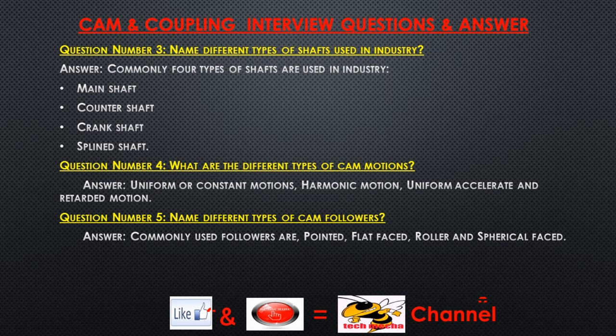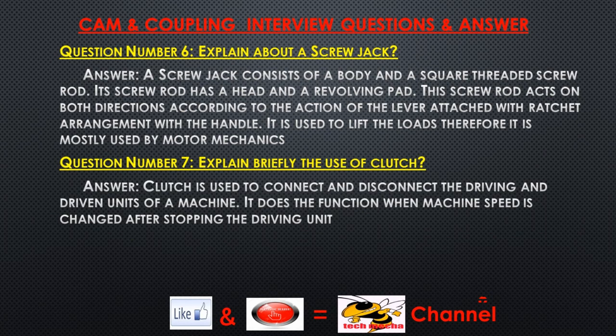Question number five: Name different types of cam followers. Answer: Commonly used followers are pointed, flat-faced, roller, and spherical-faced. Question number six: Explain about a screw jack. Answer: A screw jack consists of a body and a square threaded screw rod. Its screw rod has a head and a revolving pad.